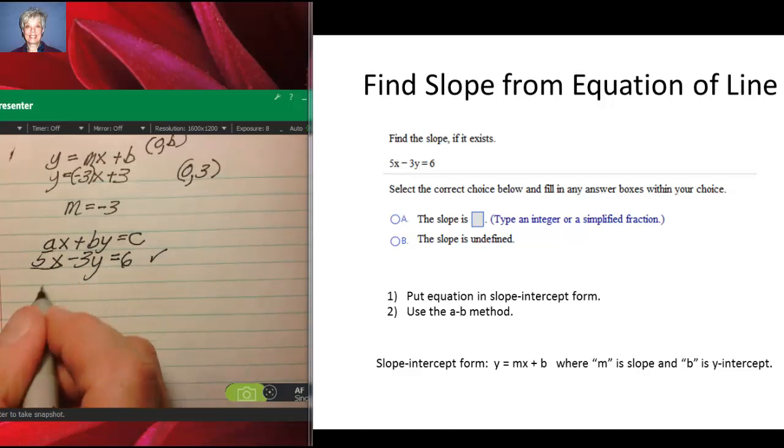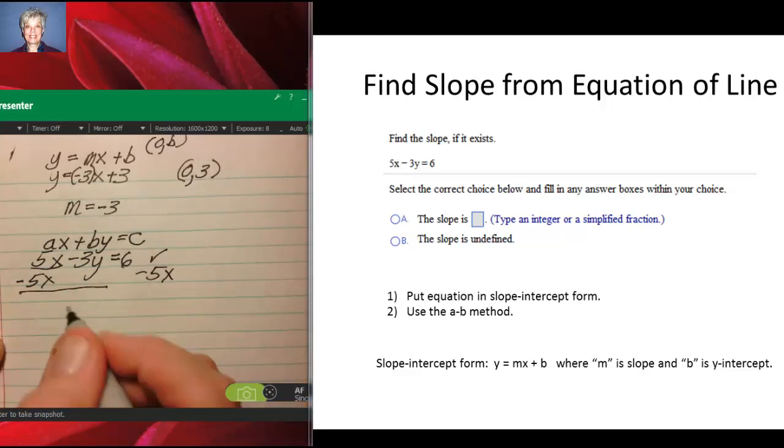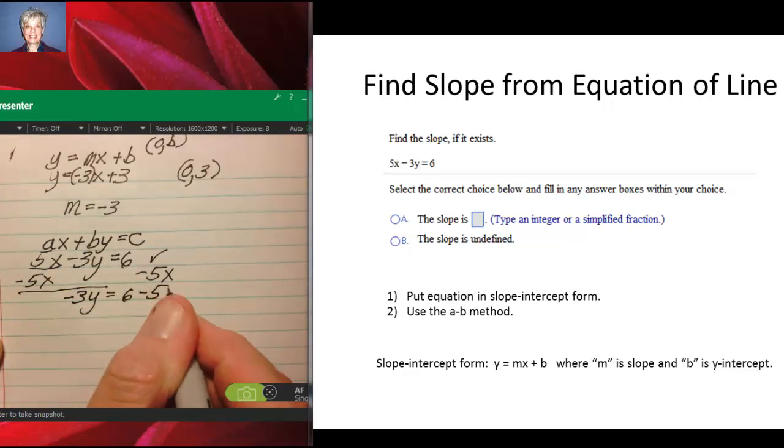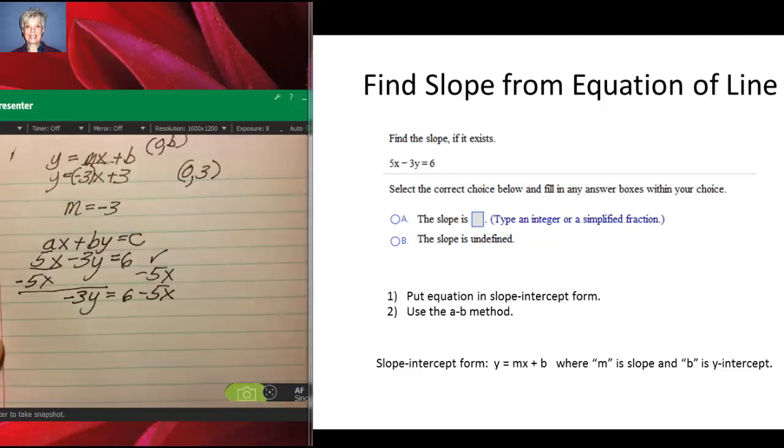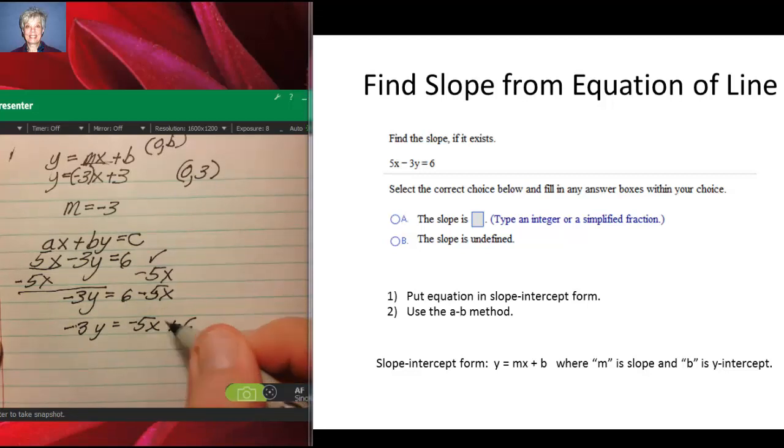Minus 5x, minus 5x so that we'll have -3y = 6 - 5x. Only this isn't really correct slope-intercept form, is it? Because the x term has to come first. So let's say this is -3y = -5x + 6. Always bring the sign in front of the number with it. Now this has a plus in front of it because it's positive. Now I'm going to divide through to get y by itself. I'm going to divide through by -3.